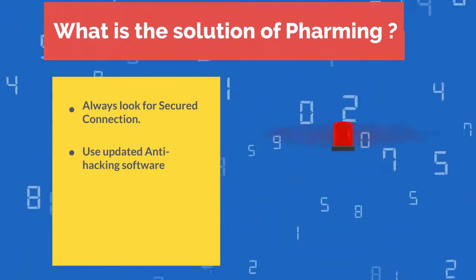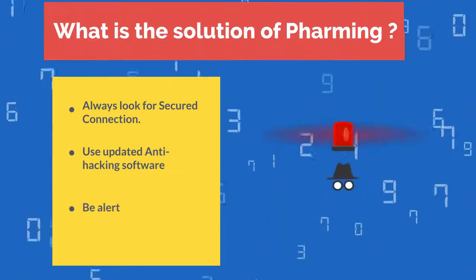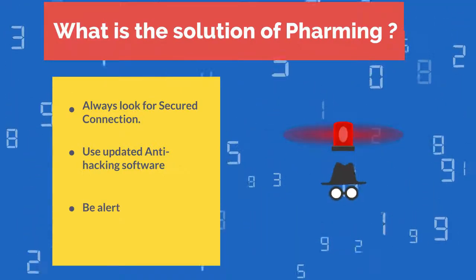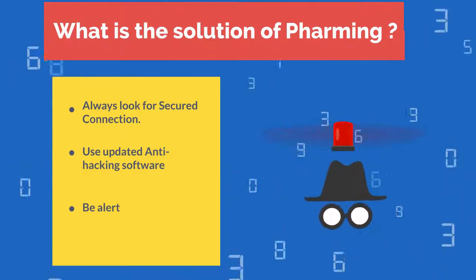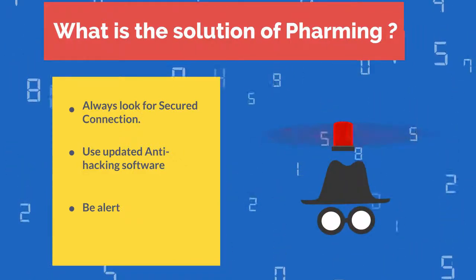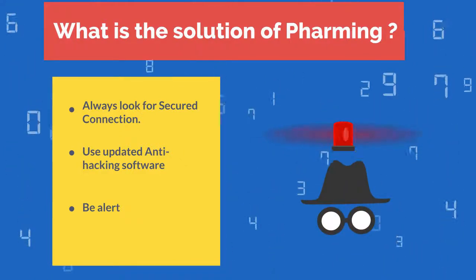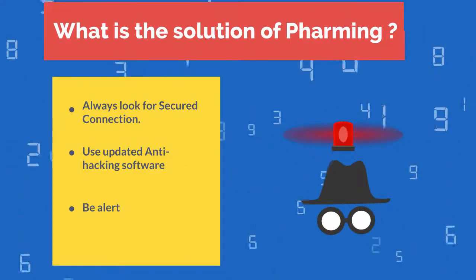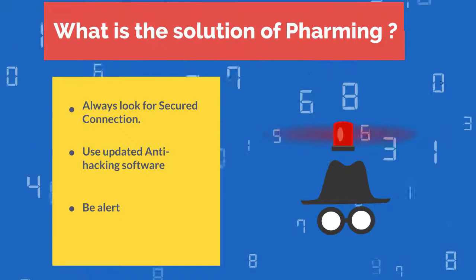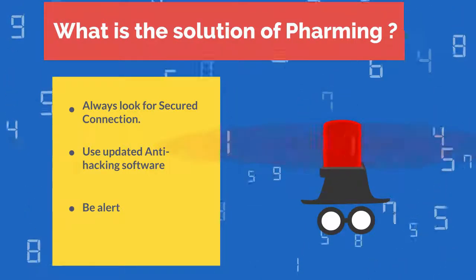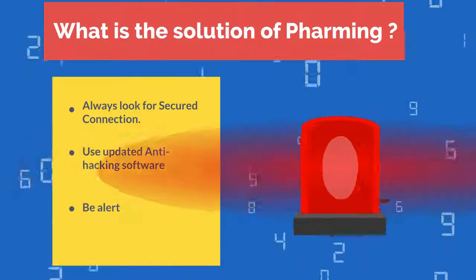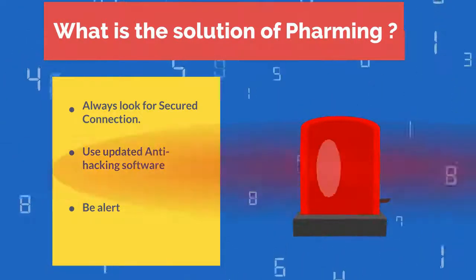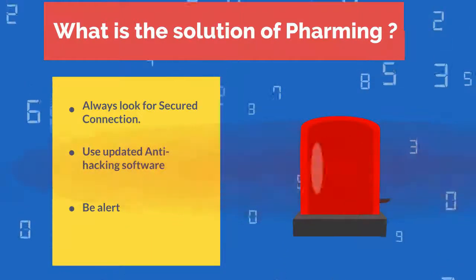Number 3: be alert. With the passage of time, malicious activities are also increasing in online transactions. The user should always be alert and watch for pharming clues, especially when doing money transactions on any website.